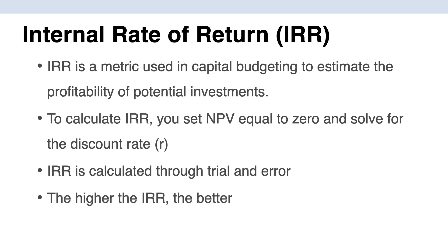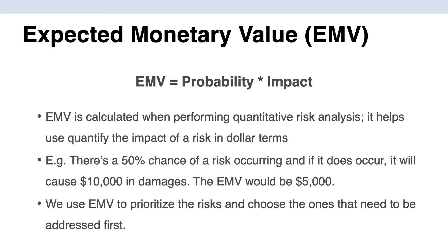Next is IRR, or Internal Rate of Return. IRR is a metric used in capital budgeting to estimate the profitability of a potential investment. To calculate IRR, we set the NPV equal to zero and solve for r, the discount rate. You can do this through trial and error, but software programs will calculate IRR for you. You want to pick the project with the higher IRR. This calculation is done at the beginning of the program when evaluating the business case to see which program makes more sense for your organization.